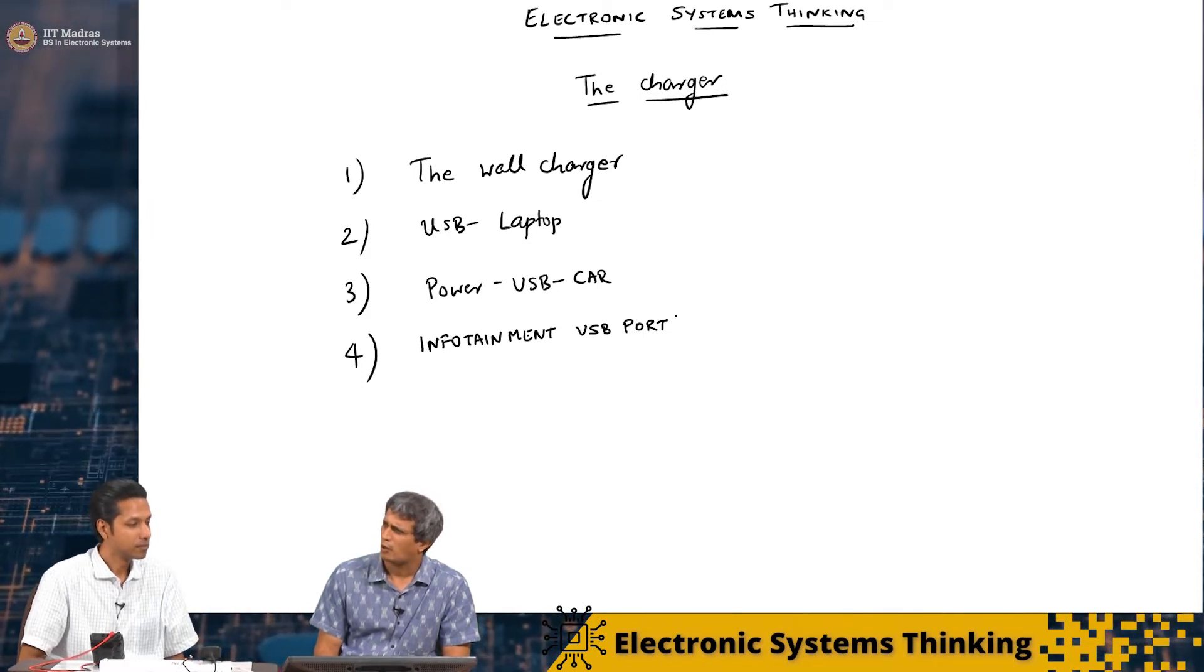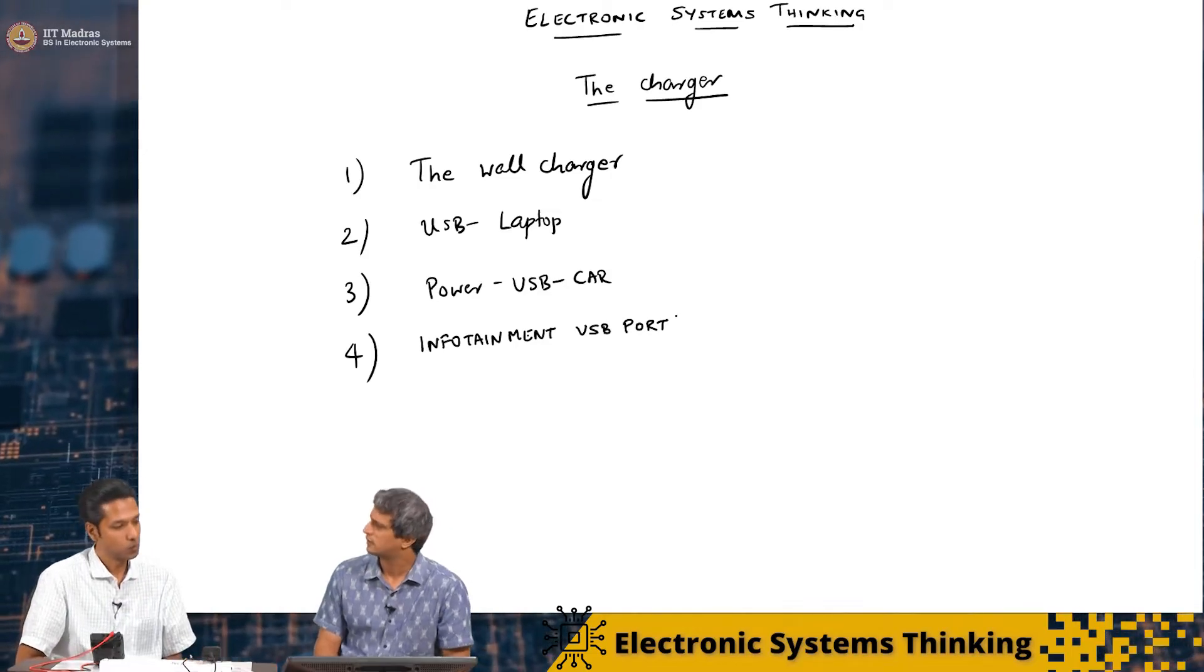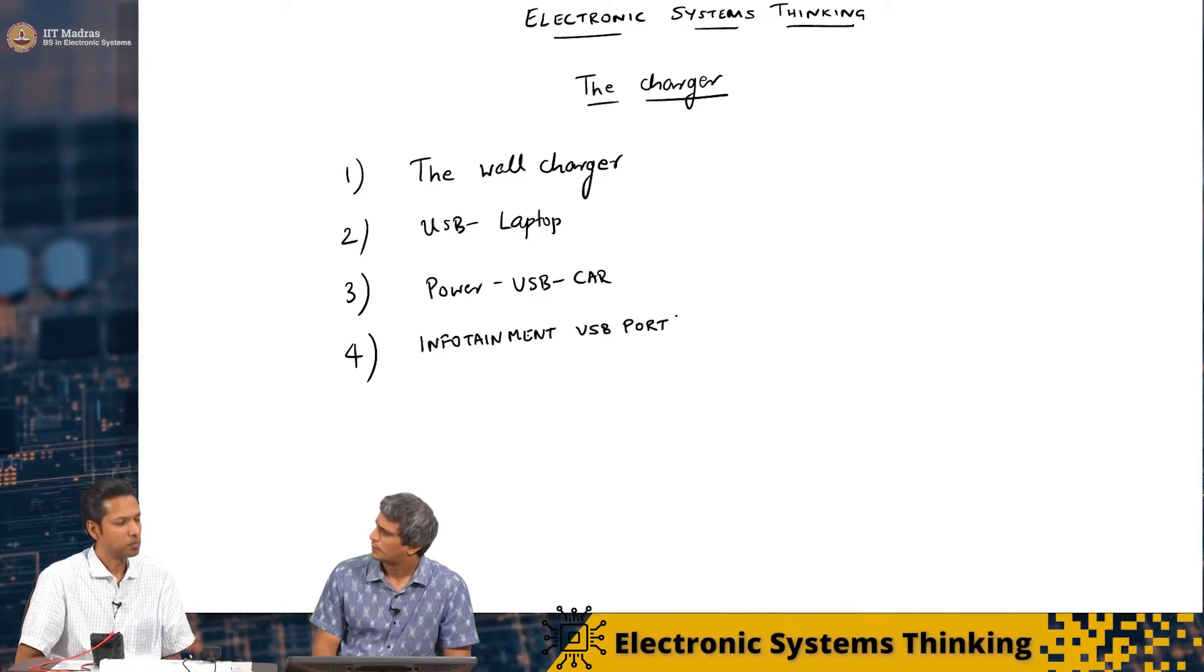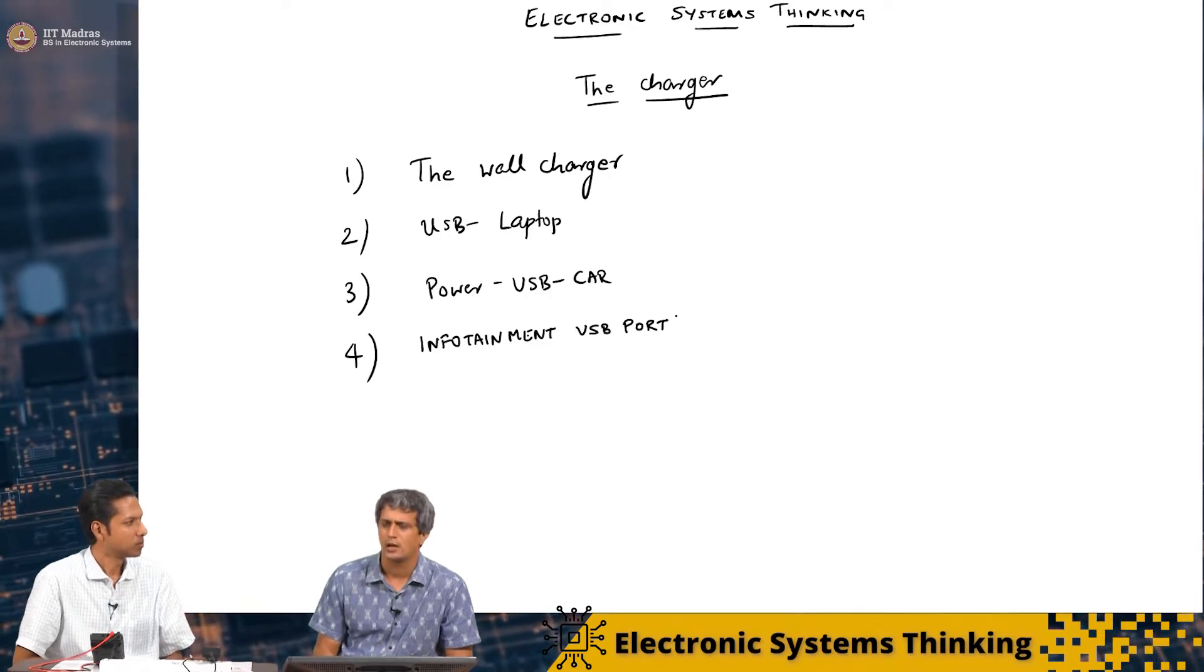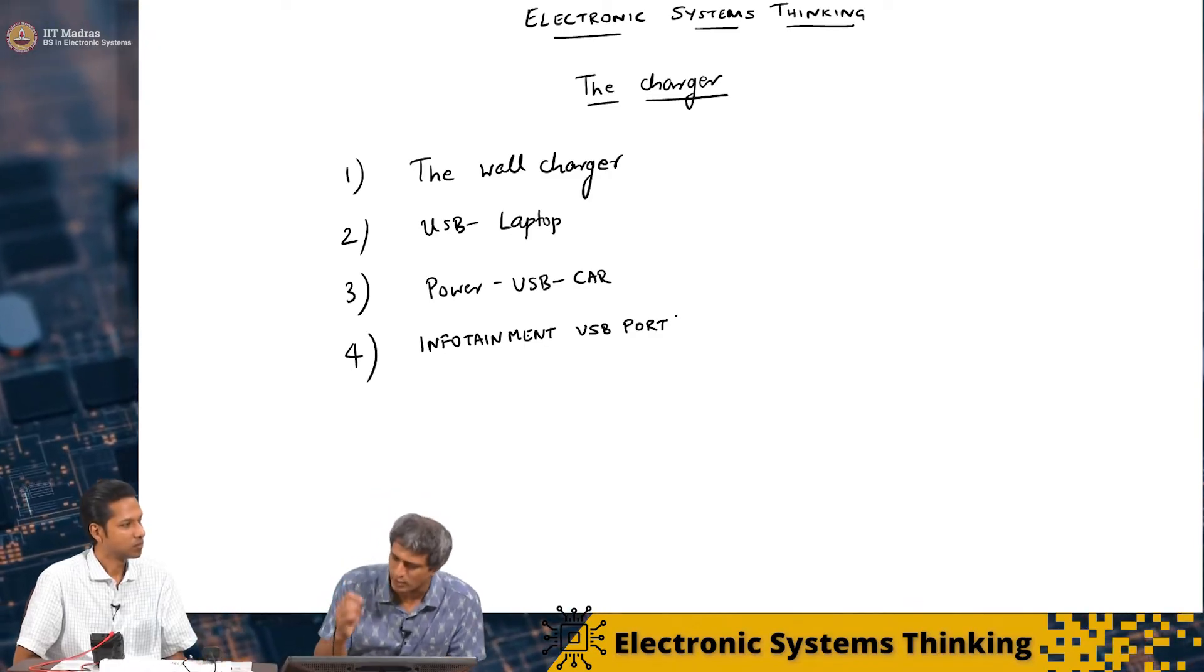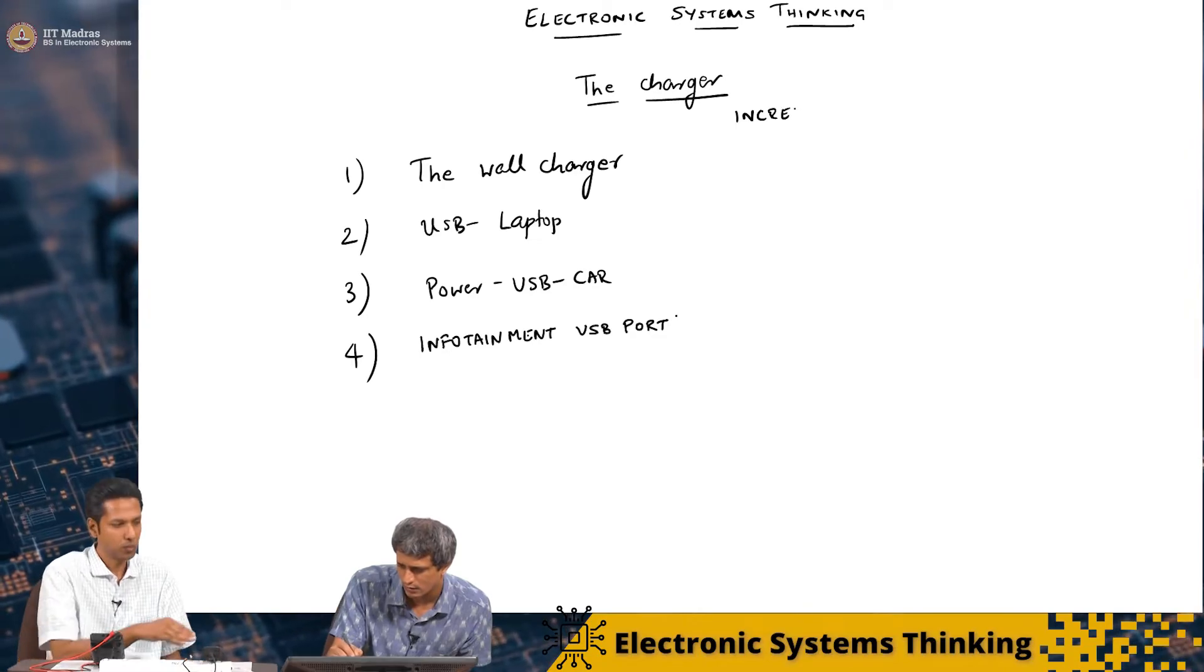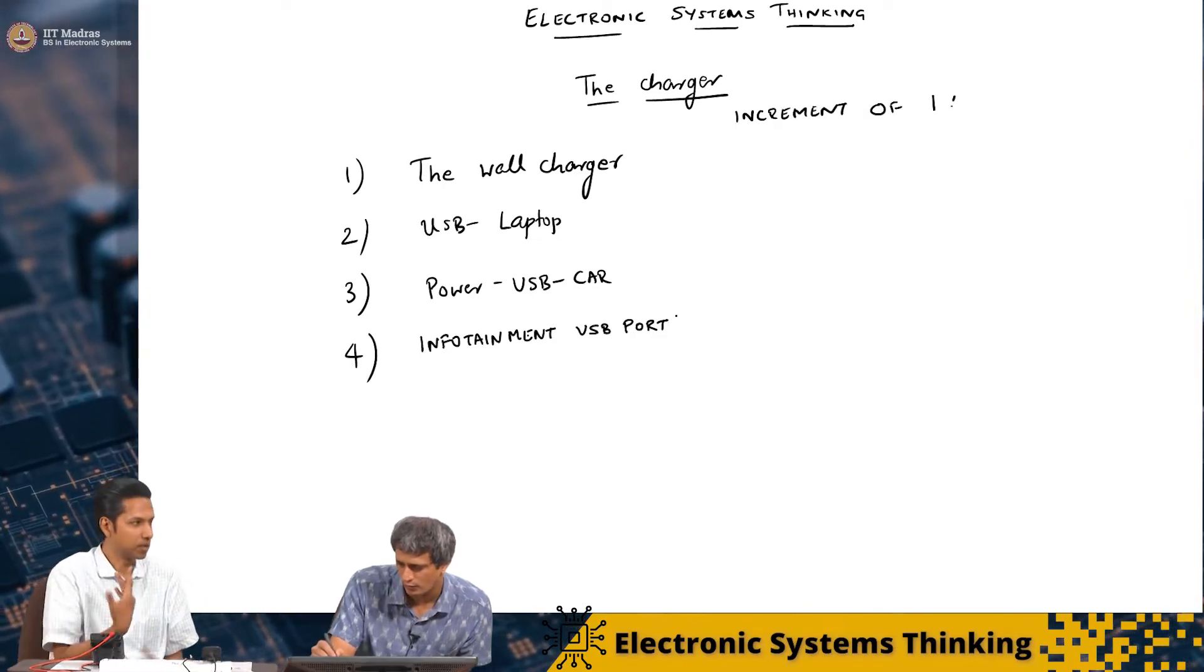But how do we go about this? Because I want to essentially see how fast it's charging. So what can I do? Maybe you can charge for some percentage? Okay. Maybe 10% might be a long time. So let me just try to charge it by increment of 1%, okay?